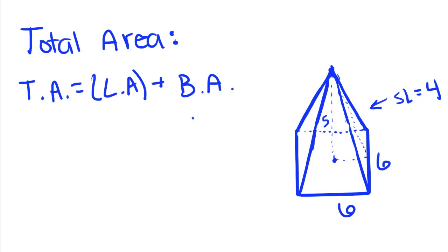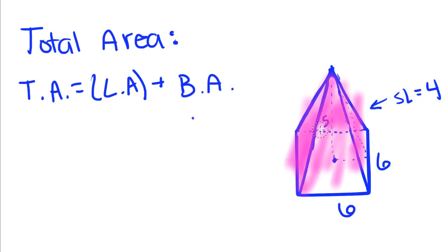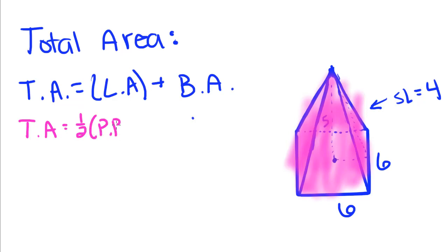Last, we have total area. When we found lateral area, we just found the area of each one of these triangles. This time, we're finding the area of the entire shape. So we're going to take our lateral area — which is one-half the perimeter of the base times the slant height — plus our base area, which is length times width.